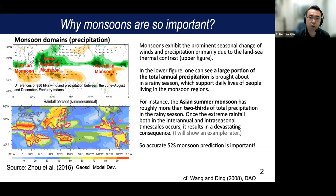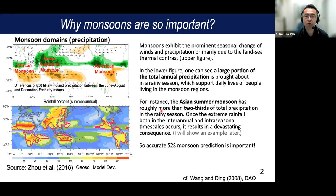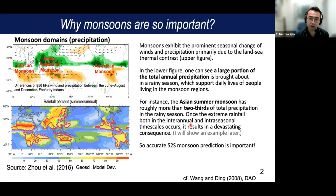These monsoons are primarily due to the land-sea thermal contrast. A large portion of total annual precipitation is brought about in the rainy seasons — for instance, the Asian summer monsoon has roughly more than two-thirds of total precipitation in the rainy season. Once extreme rainfall occurs on inter-annual and intra-seasonal timescales, it results in devastating disasters. So predicting the monsoon at the S2S timescale is quite important for disaster mitigation.